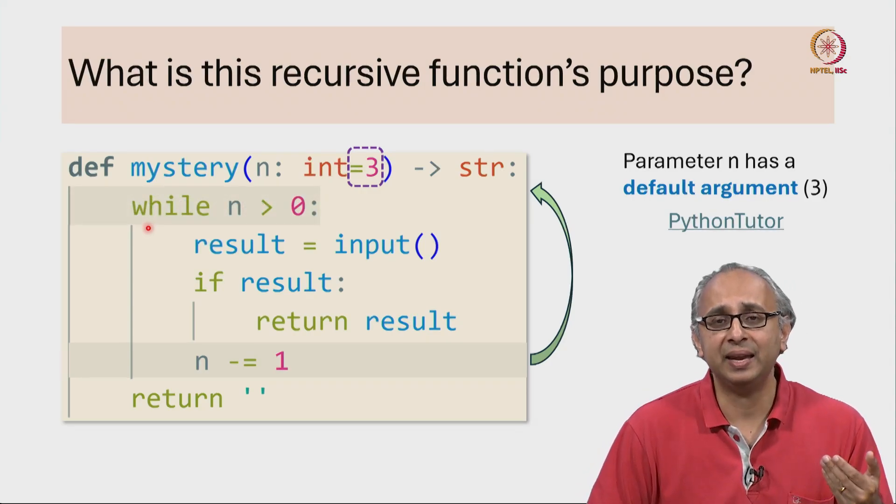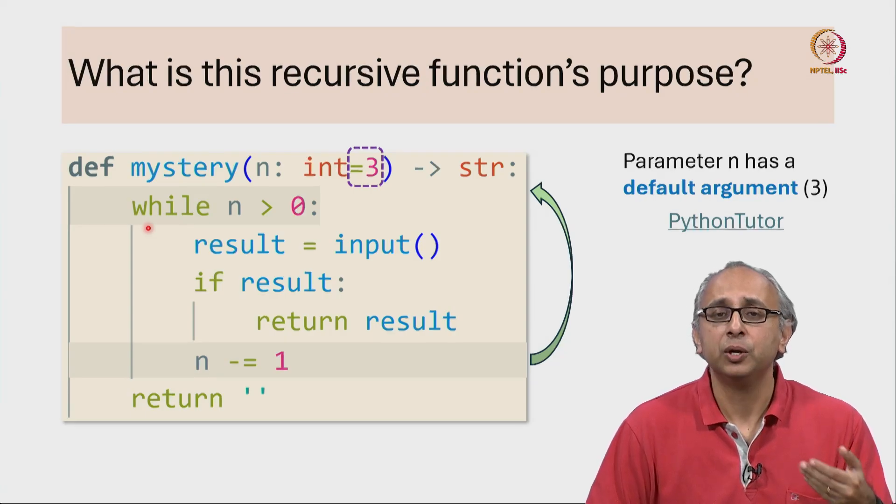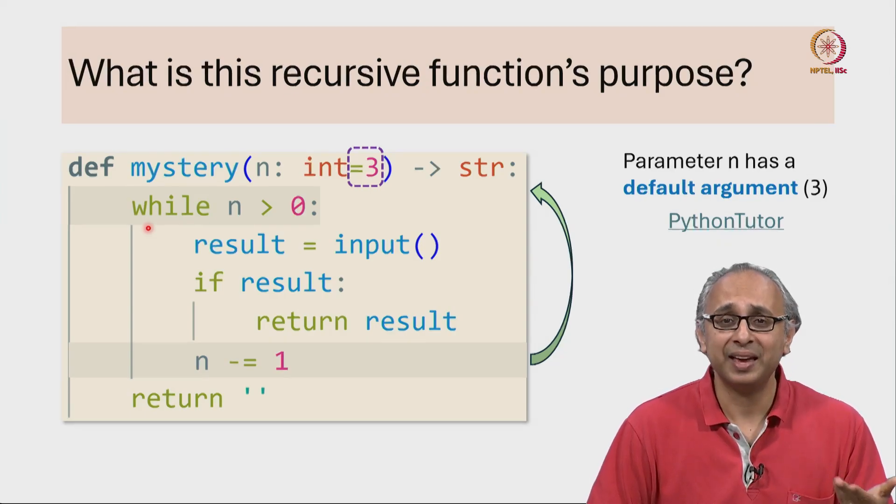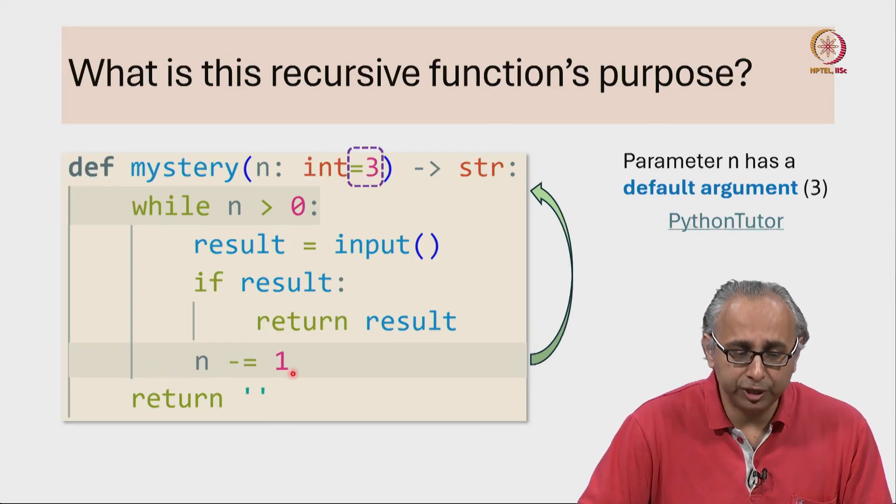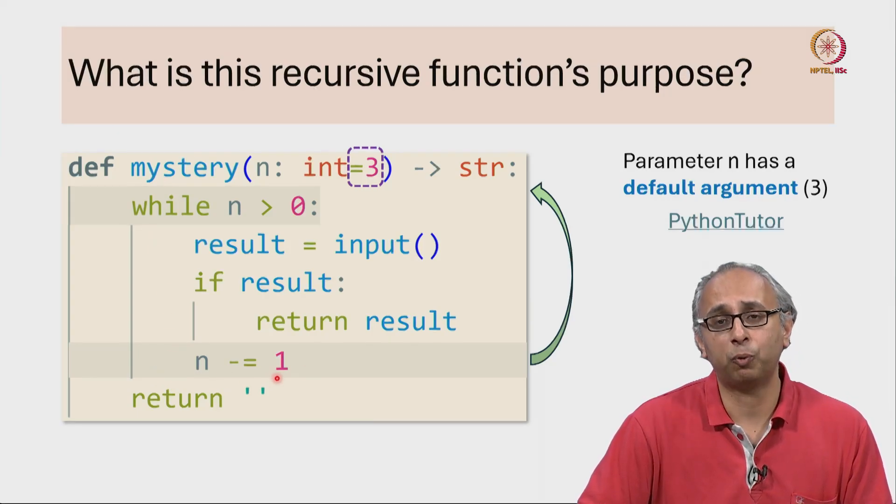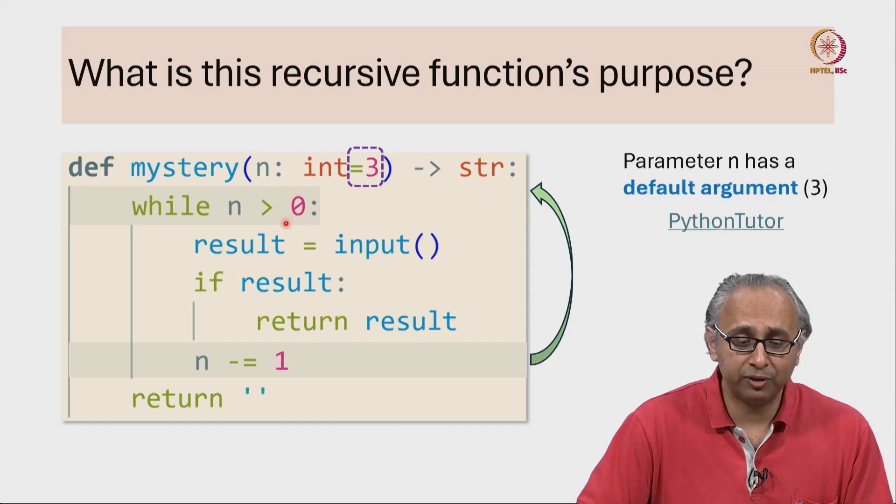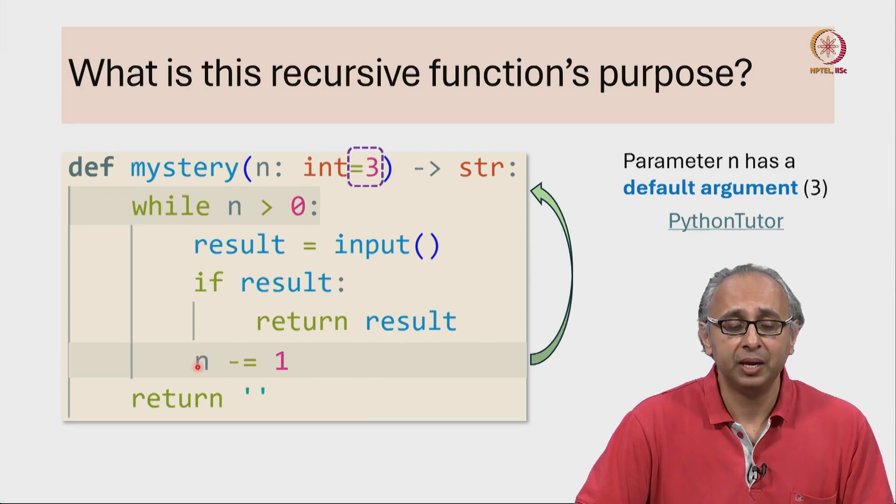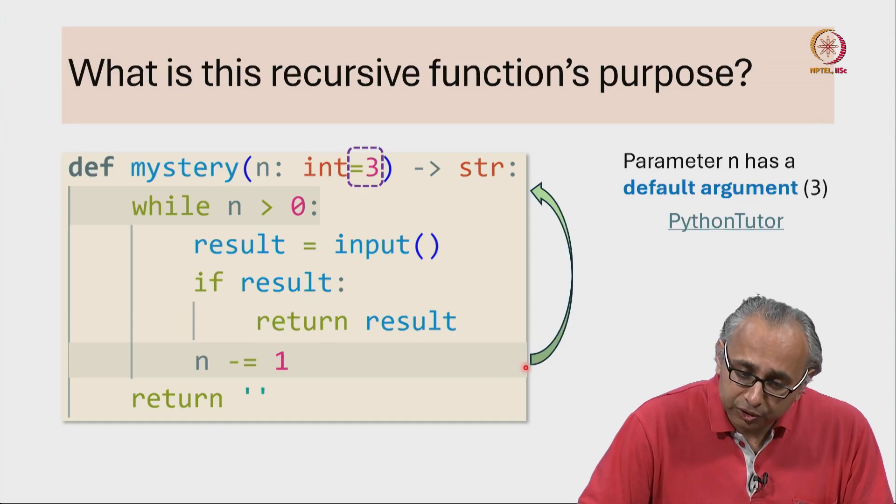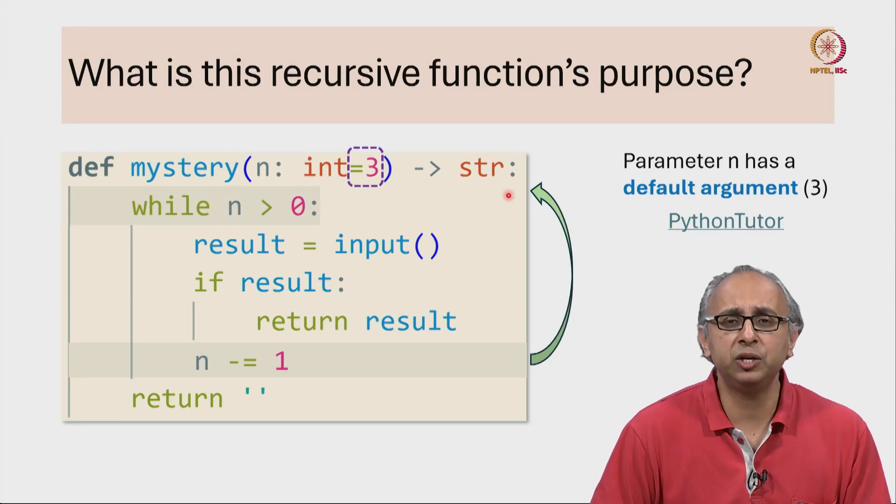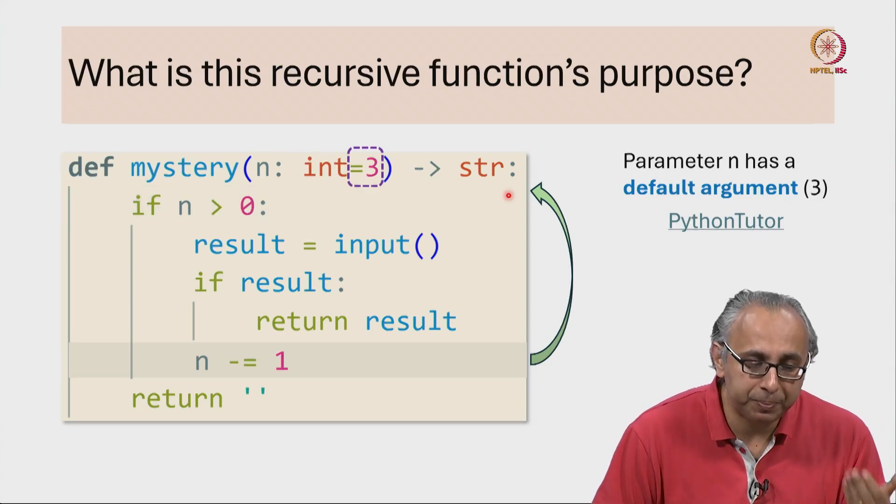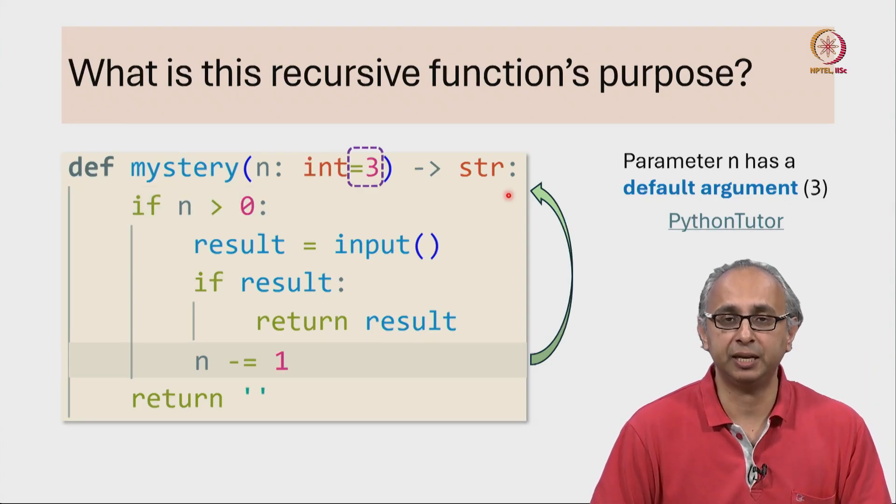So while n is bigger than 0, meaning as long as n is bigger than 0, do this. And when you have finished doing the body of the while loop, that is everything that is indented one level with respect to the while, when you have finished doing that, this will loop back to the top. So the while loop is a repeated if statement.